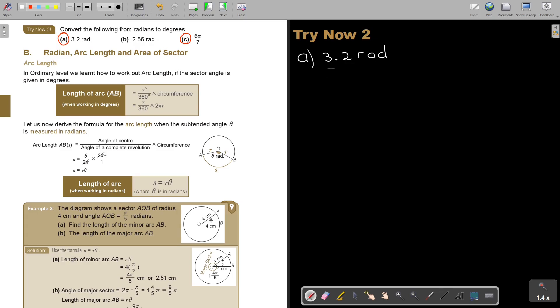So basically I'm going to say 3.2 and I prefer to divide by π over 180. If I press that on my calculator, 3.2 divide by π over 180, close the bracket, equals, I will get 183.3 degrees. Let's look at number c.